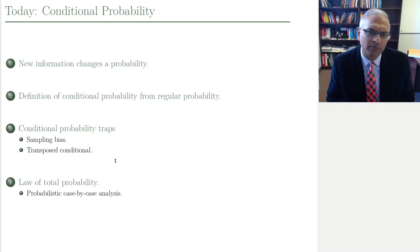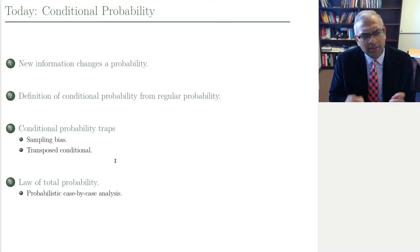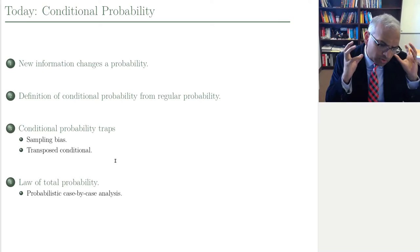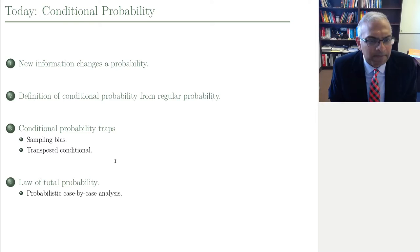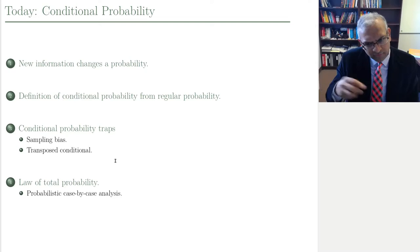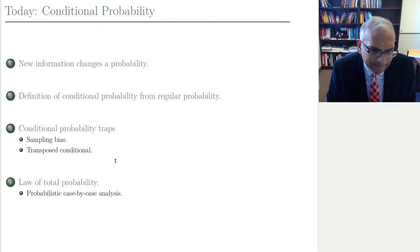We'll end with a very important tool, similar to the sum rule in counting — we call it the law of total probability. If you're trying to compute the probability of some event and you can break it down into two specific events, you can compute the probabilities of those two events and add them together. This allows us to do probability analysis using a case-by-case approach, just as we used case-by-case counting.